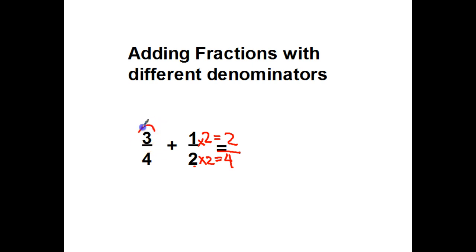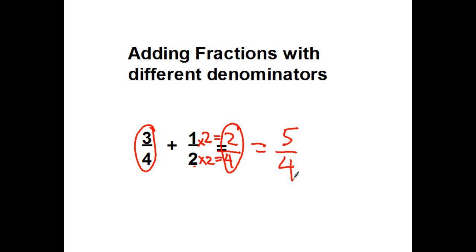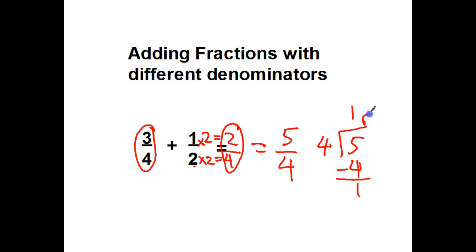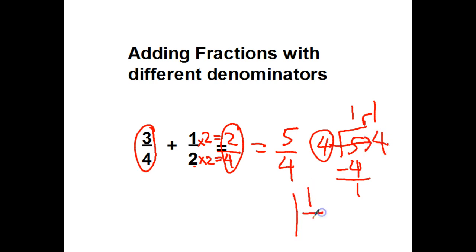So now I have 3 fourths plus 2 fourths equals 5 fourths. Then when I go to simplify, because I have an improper fraction, that really means 5 divided by 4. It goes 1 time. Subtract. I got 1 remainder 1. Remember, we bring this guy over right underneath. 1 and 1 fourth.